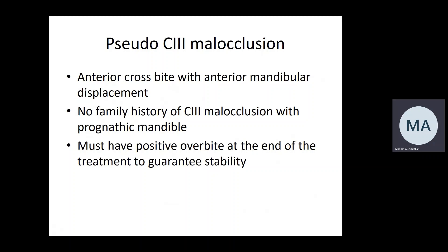Cases with pseudo-Class III malocclusion are presented with anterior crossbite and anterior mandibular displacement. Usually the skeletal pattern is Class I or mild Class III, with no family history of Class III malocclusion or prognathic mandible, and the overbite is average or increased. If all these features are present, then a successful treatment result is almost guaranteed.